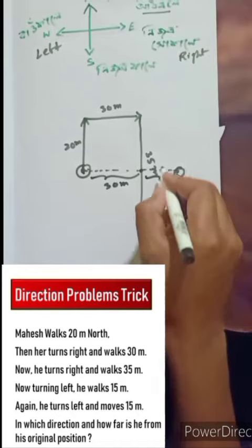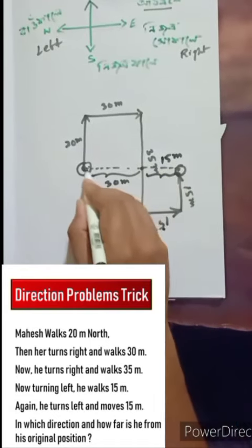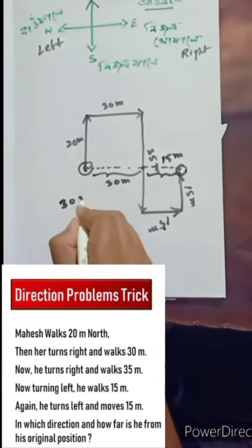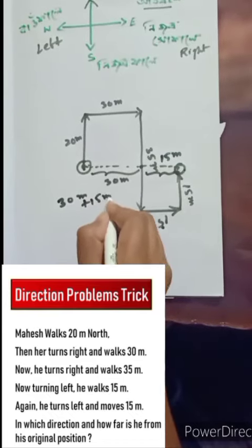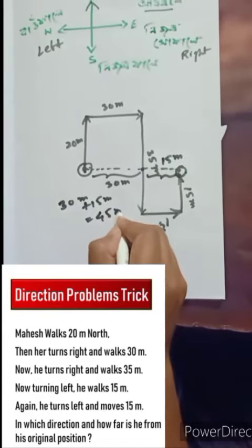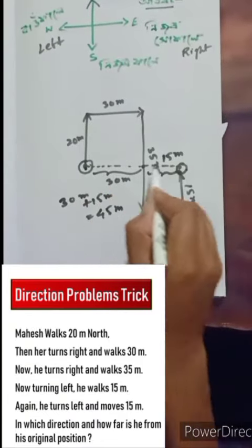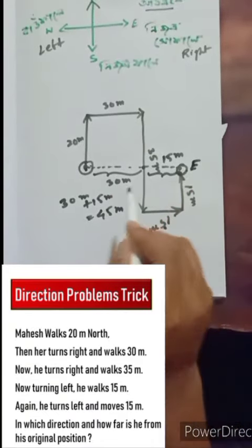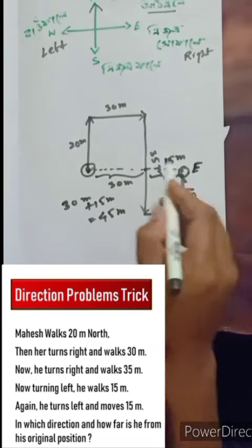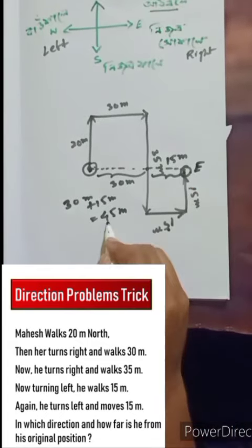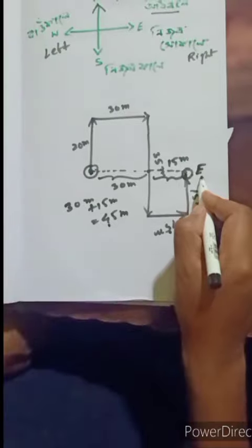The total distance is 45 meters. The distance between the positions is 45 meters.